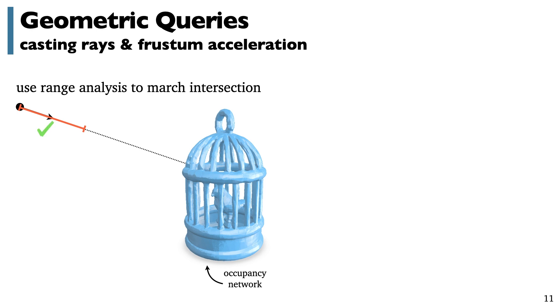If we want to march this ray forward in space to cast it into the surface, we can first analyze this interval shown here. And sure enough, range analysis tells us that it's strictly outside the shape, so we can march forward. If we test this interval, well, maybe our range analysis is a little bit too pessimistic with its bounds, so we don't see that it's outside of shape. But if we try a smaller interval, we're good to go, and we can continue marching and marching and marching until eventually this ray converges to the shape.